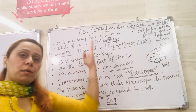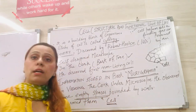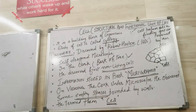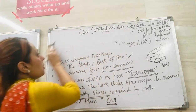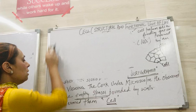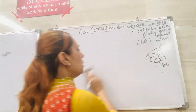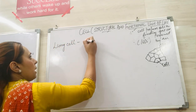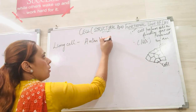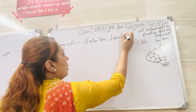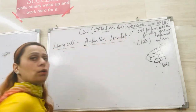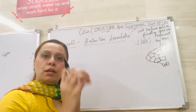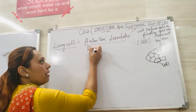On viewing the cork under the microscope, he discovered some empty spaces and those empty spaces were named as cells. Now we shift to the next discovery — who discovered the living cell? The first living cell was discovered by Anton Von Leeuwenhoek. He discovered the living cell in water, and that cell was a spunk of an amphibian.